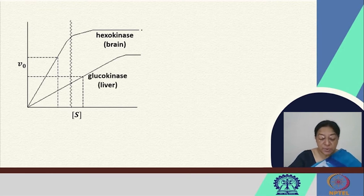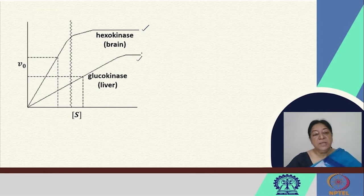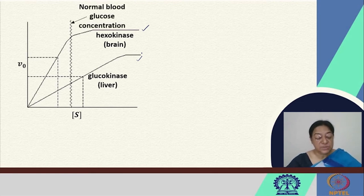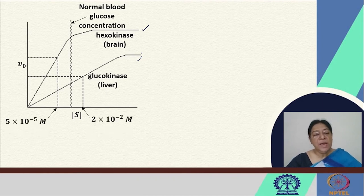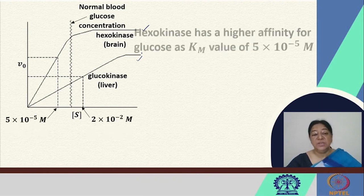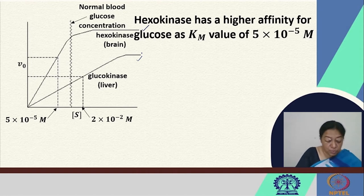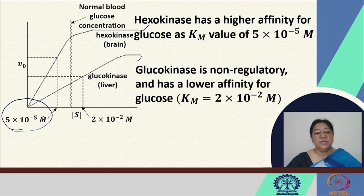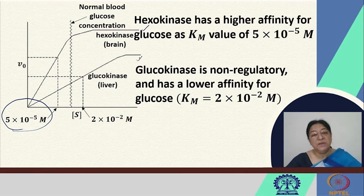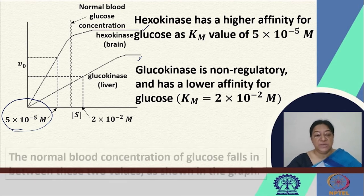This is the hexokinase plot and this is the glucokinase plot. Hexokinase is found in the brain and glucokinase in the liver, and the normal blood level concentration is as indicated. We have the two Km values associated with these proteins, and hexokinase has a higher affinity for glucose because of its lower Km value. Glucokinase, being non-regulatory, has a lower affinity for glucose, which is also apparent from the enzyme kinetics plot.